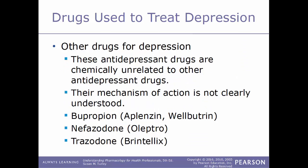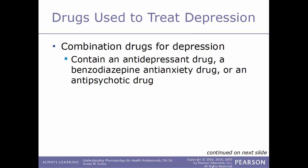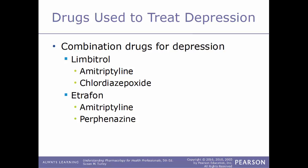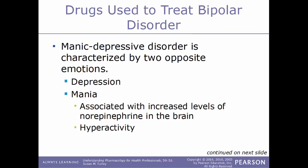Some other drugs used for depression are chemically unrelated to other antidepressants and their mechanism of action is not clearly understood. Examples include bupropion (Wellbutrin/Aplenzin), nefazodone, trazodone (Oleptro), and vortioxetine (Brintellix). Combination drugs are also available for depression, containing an antidepressant plus a benzodiazepine anti-anxiety drug or an antipsychotic. Examples include Limbitrol (amitriptyline and chlordiazepoxide) and Etrafon (amitriptyline and perphenazine).